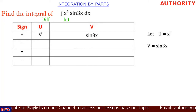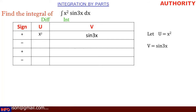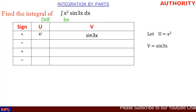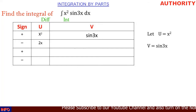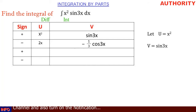Under the u column we perform differentiation, and under the v column we perform integration — that's the DI method. We keep differentiating u until it becomes zero. So differentiating x squared gives us 2x. For v, the integral of sine 3x gives us minus 1 over 3 cos 3x.